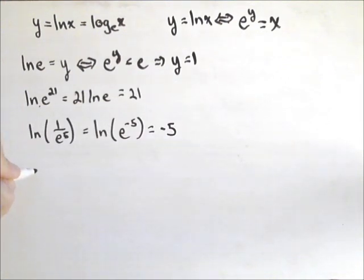The same thing goes if we have a natural log in the exponent of e. So for instance, if I had e to the natural log of 3, this base and this base are the same, so that's equal to 3.